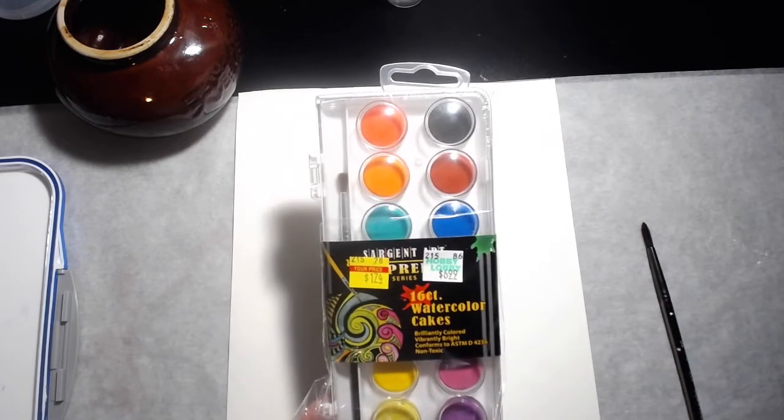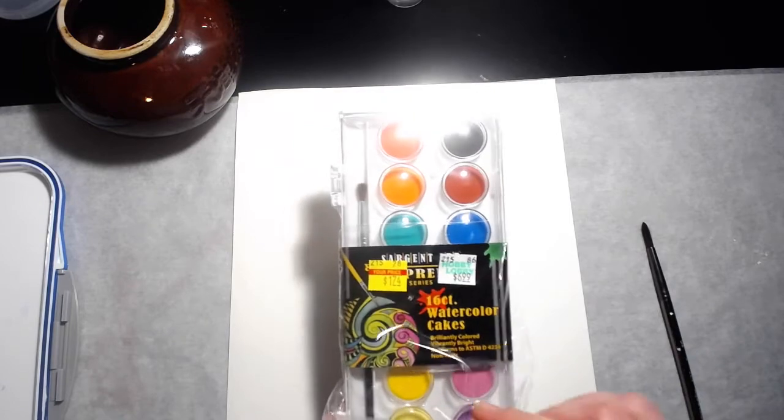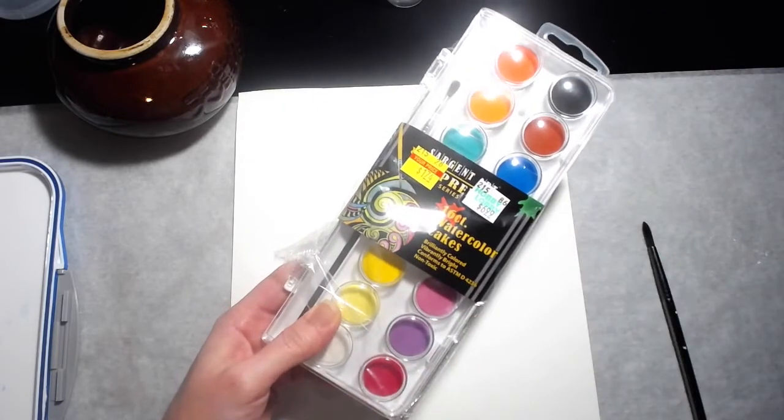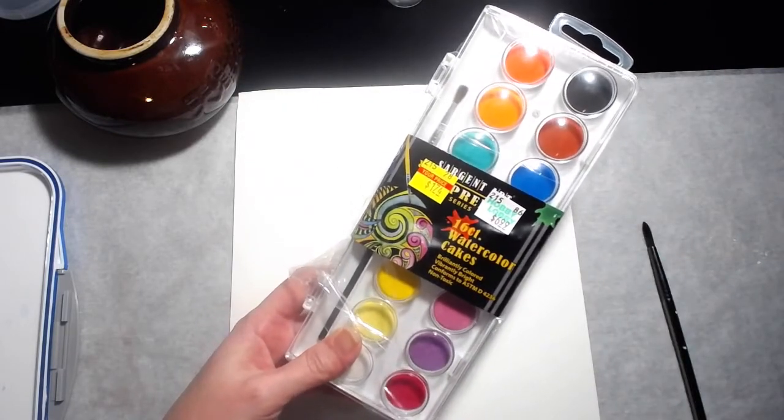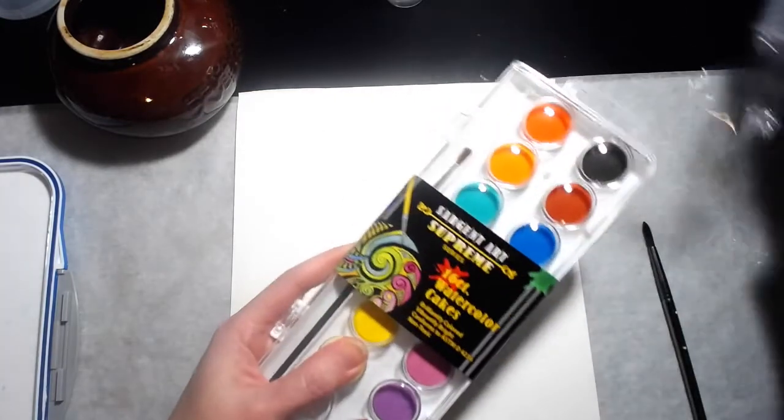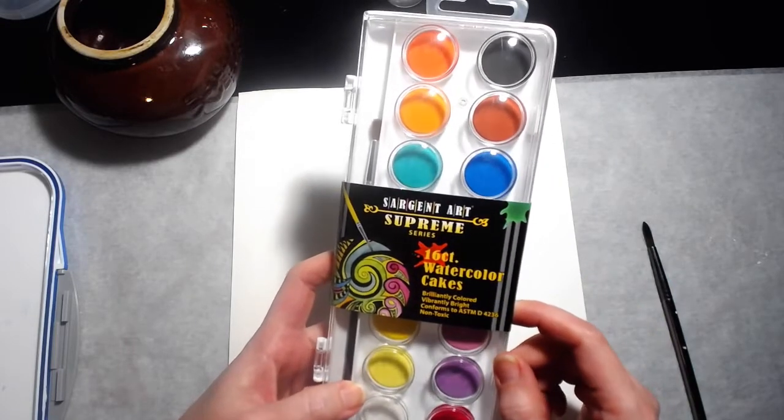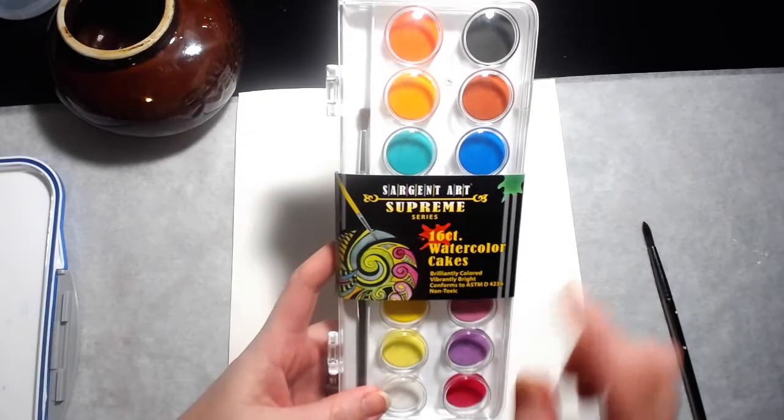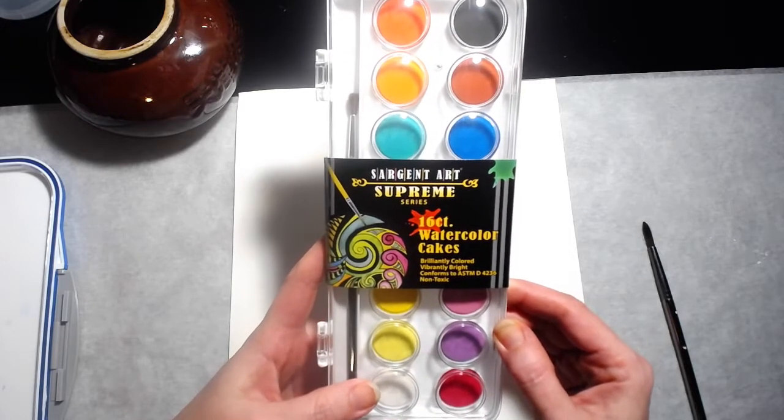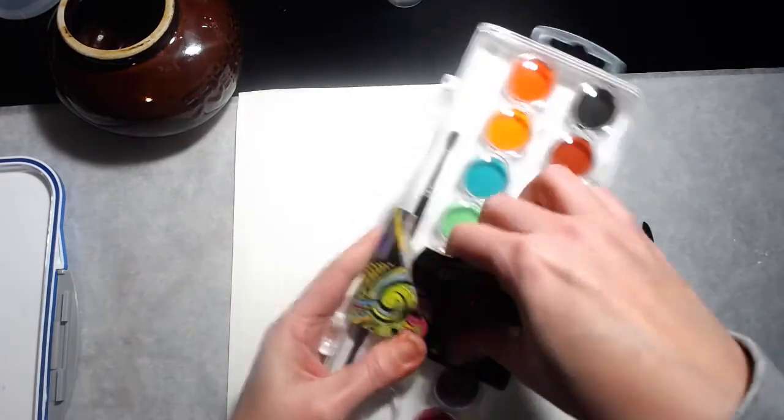I just wanted to see what the colors look like and see how they react with water, like how well they spread and how well they blend. So I thought that I would just go ahead and film this in case you guys wanted to see how these work because I would assume that they will still have these on clearance if you want to go pick a set up. And there's 16 colors here and I'm thinking that these are opaque, that these are not translucent colors. But we'll find out. And this is Sergeant Art Supreme Series, 16 count watercolor cakes, brilliantly colored, vibrantly bright. So I'm just going to get started.